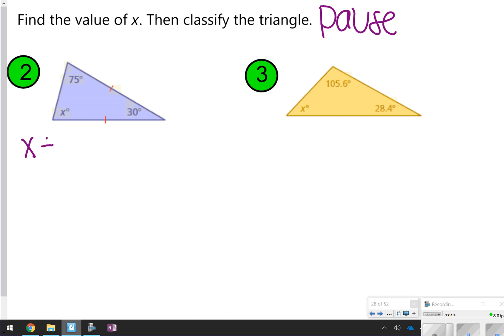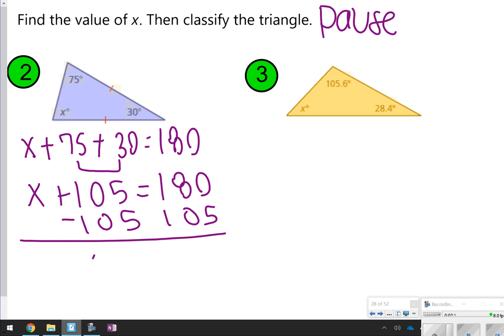Okay, so for number 2, we've got x plus 75 plus 30 equals 180 degrees. 75 and 30, that's 105. So x plus 105 equals 180. And then when we subtract 105 from 180, x equals 75.